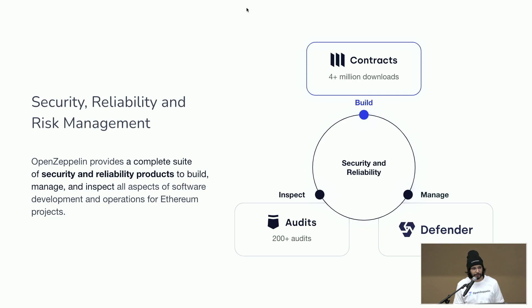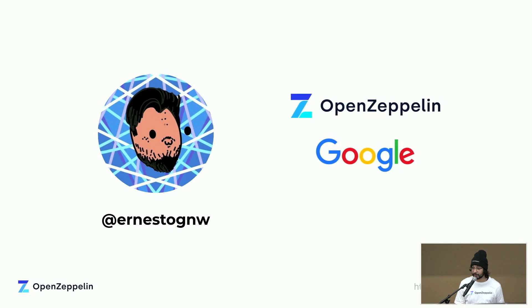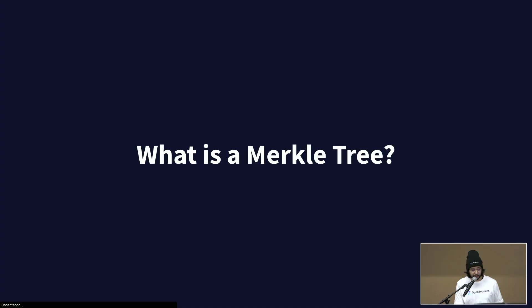You may already know us because of the library of contracts, but we also have other open source efforts with additional libraries. That's what we're going to talk about today: the Merkle tree library we released last November. I'll tell you about the reasons why we released it and a cool story about hacking Merkle trees. A quick introduction — my name is Ernesto Garcia, find me on Twitter as @ErnestGNW. I previously worked at Google Cloud and Google Chrome teams, and now I work at OpenZeppelin as a smart contract developer.